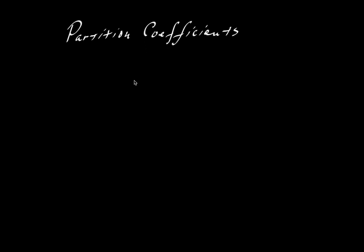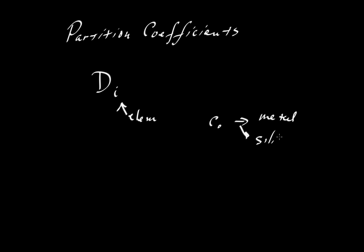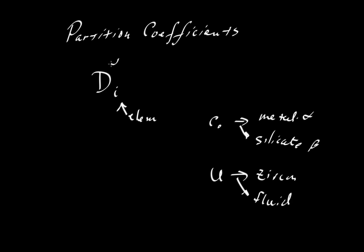In two other videos, we talked about partition coefficients, or so-called distribution coefficients. We represent them with the letter D, with some subscript I indicating the element of interest. In those videos, we looked at the partitioning of cobalt between a metal and a silicate phase, and the partitioning of uranium between a mineral like zircon and some fluid. We can write this in very general terms as partitioning between alpha and beta.